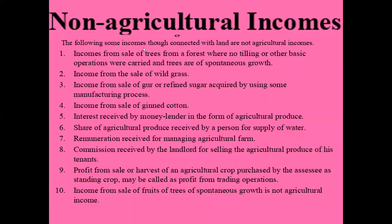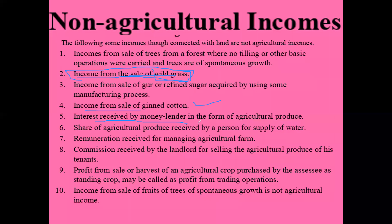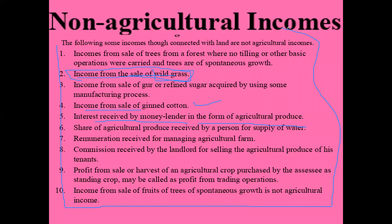These cannot be termed as agricultural incomes — these are non-agricultural incomes and the person has to pay income tax on them. For example, income from sale of wild grass: if in your agricultural field you did not cultivate anything, no seeds were put, no crop was grown, and simply wild grass grew and you sold it for money — that is not agricultural income. Also, income from sale of cotton and interest received by a money lender in the form of agricultural produce are also not agricultural income.